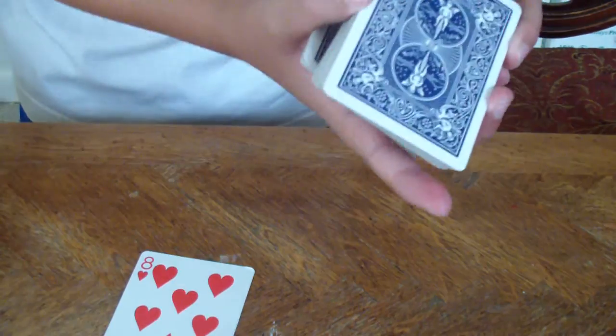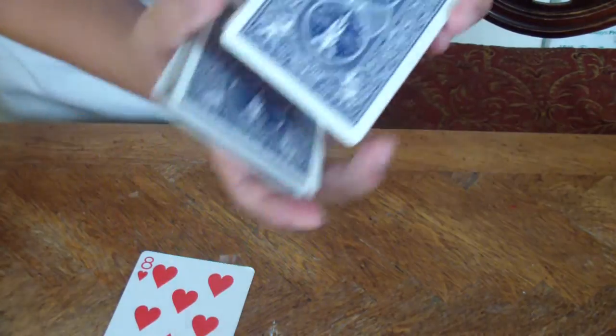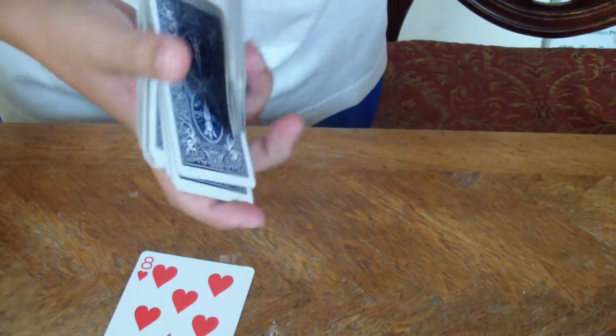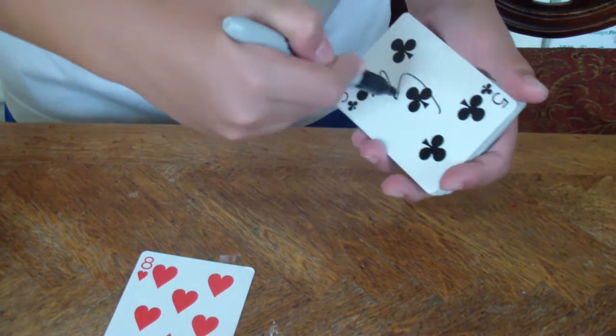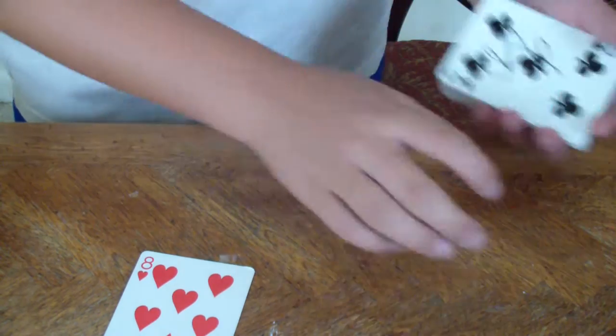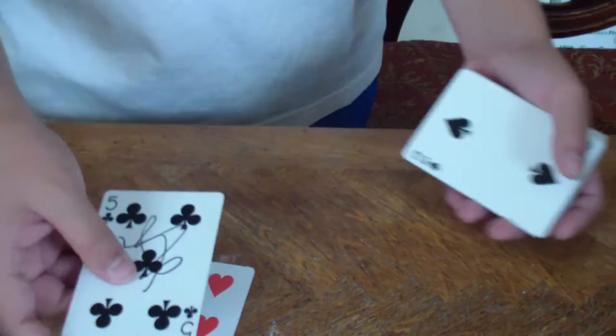Now what I'm going to do is I'm going to go through the cards, ask the spectator to say stop, let's say stop right there. Ask them to sign the face of this card. Whatever. Set that card down right there.